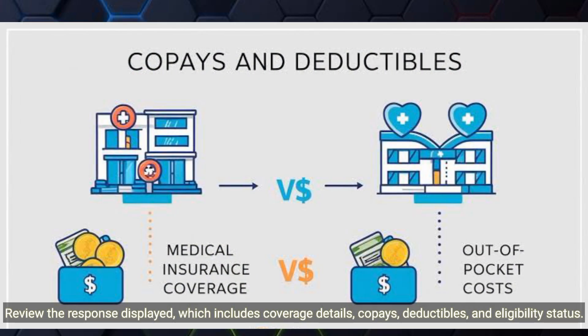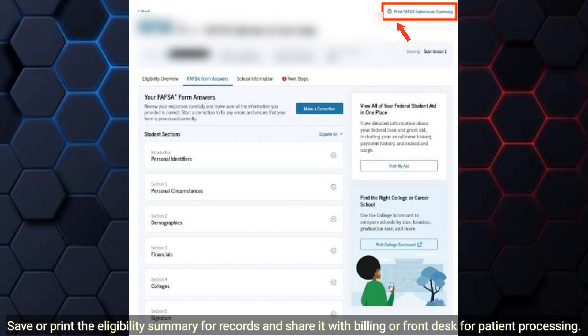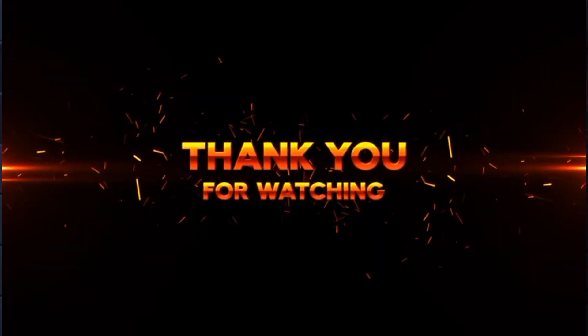which includes coverage details, COPs, deductibles, and eligibility status. Save or print the eligibility summary for records and share it with billing or front desk for patient processing. Thank you for watching.